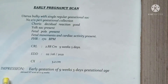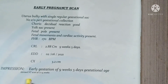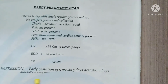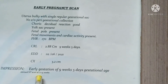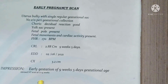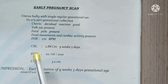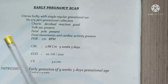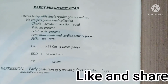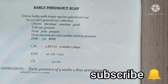If you have a problem, you can see an early pregnancy scan. The impression shows no problem — early gestation of 9 weeks 5 days. You can refer to an early pregnancy scan report for more details.